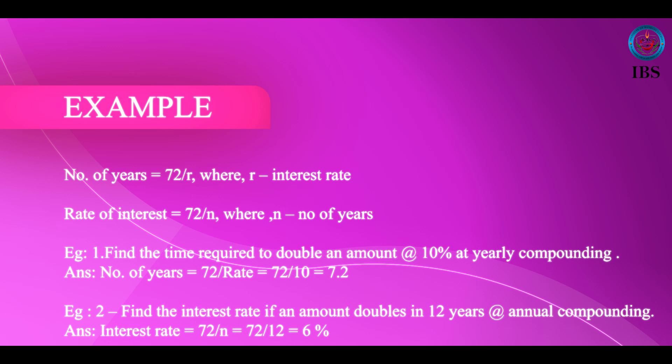Similarly, the question can be the other way. If an amount becomes doubled in 12 years, what is the rate of interest? You divide 72 by 12, which gives you 6. So the rate of interest is 6% if an amount becomes doubled in 12 years. This is another important concept in interest calculation — we call it the Rule of 72.